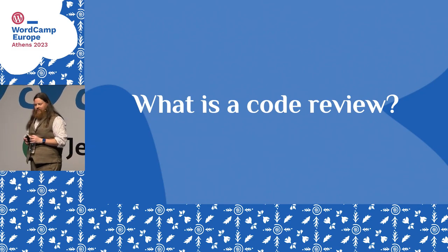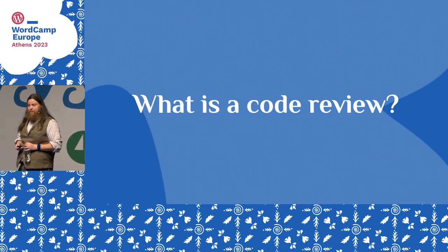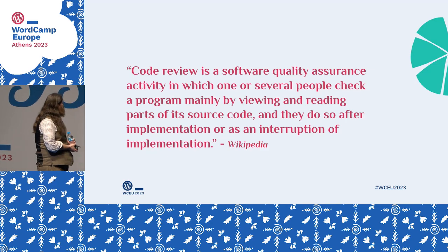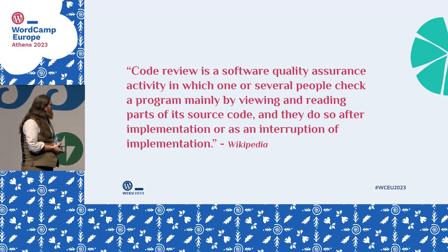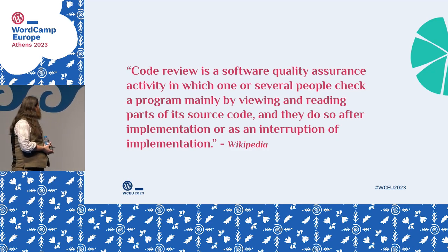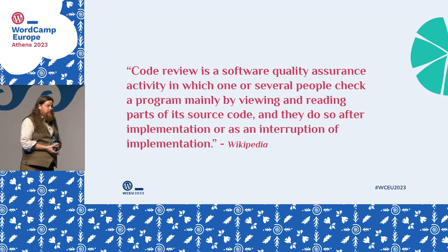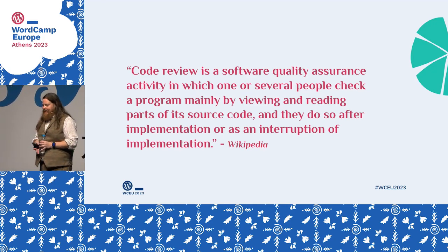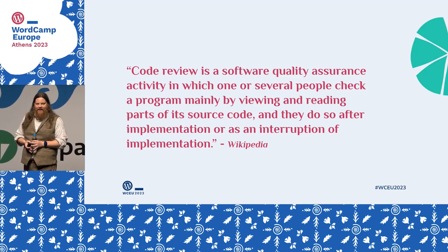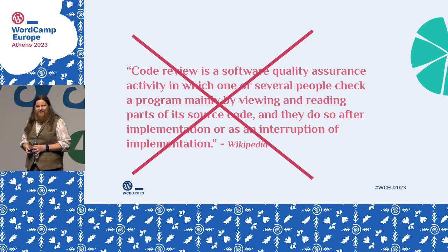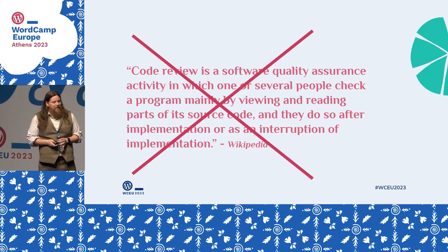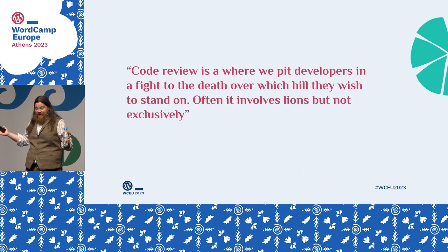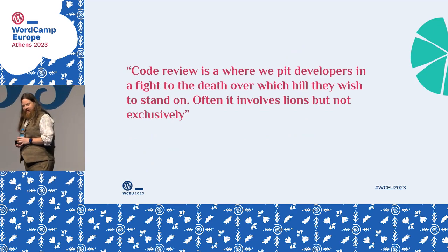When I thought about doing this talk, I went to Wikipedia. They say something like: 'A code review is a software quality assurance activity in which one or several people check a program mainly by viewing and reading parts of its source code, after the implementation or interruption of implementation.' This has clearly been written by a project manager who likes to go on Wikipedia — no developer has ever said this.